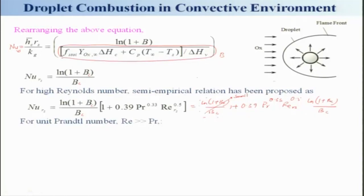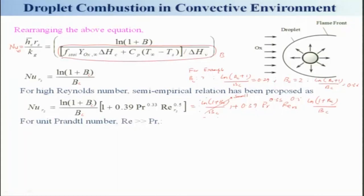Let us say B = 7. Then ln[(B_c + 1) / B_c] will be 0.29. Let us take another example where B_c = 2. Then this term, ln[(B_c + 1) / B_c], will be very very small — around 1/3. Because this is a logarithm term, it gets compressed and becomes very small. So therefore you can neglect it, and if you neglect that, then Nu_rs is approximately equal to the remaining term, provided the Prandtl number is equal to 1 or very very small.